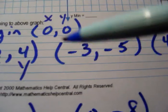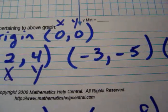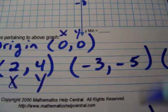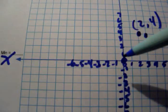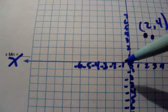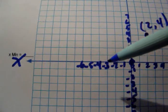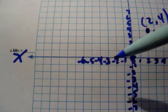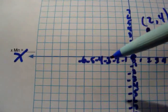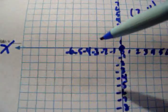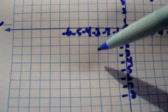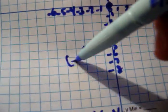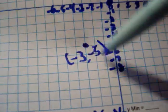Next, we have negative three comma negative five. We're going to go to negative three on the x, and then negative five on the y. In the x direction, negative three is right here — negative one, negative two, negative three. Now where's negative five? We went left, now we have to go down. Negative five is down from there — negative one, negative two, negative three, negative four, negative five. Right here. That is negative three, negative five.